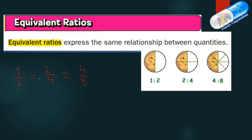How do we get equivalent fractions from each other? If you have one over two, I can multiply both numerator and denominator by two to get two over four. Then multiply up and down by two again to get four over eight. So equivalent ratios can be found by multiplying or dividing the numerator and denominator of the ratio by the same number.